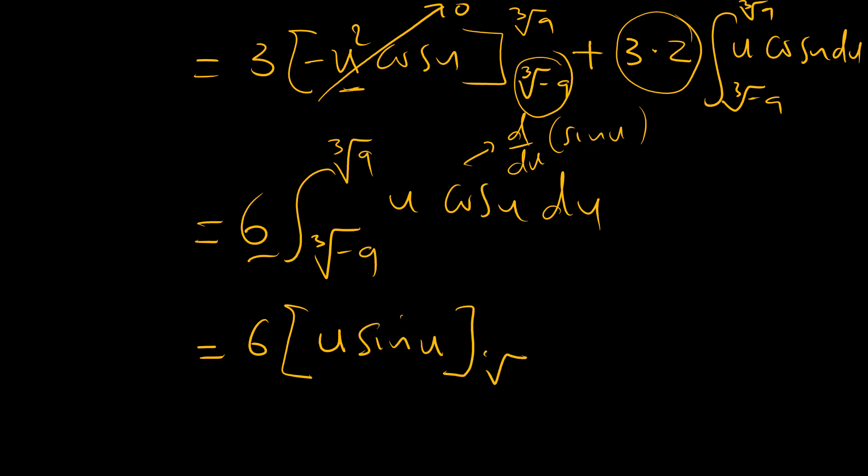So that's when u goes from cube root of negative 9 to cube root of positive 9, minus 6 times the integral of sine u, because we've now differentiated u, which is 1, with the same limits.